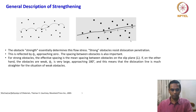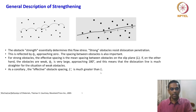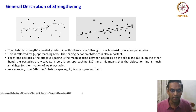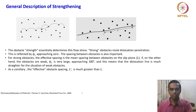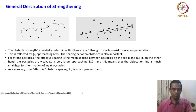For weak obstacles, penetration means the dislocation is cutting through. The effective obstacle spacing L prime is much greater than L. When the obstacle completely resists the dislocation line, the effective spacing is L. But when the dislocation cuts through, L prime is an average of the particle distances along the line, not just the distance between two particles. There is a key difference between hard and weak obstacles for dislocation motion.